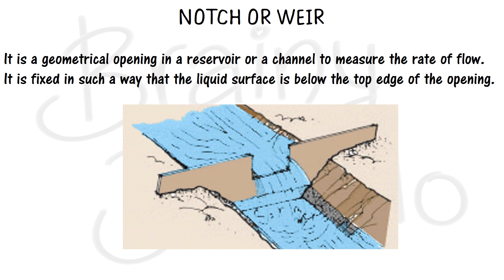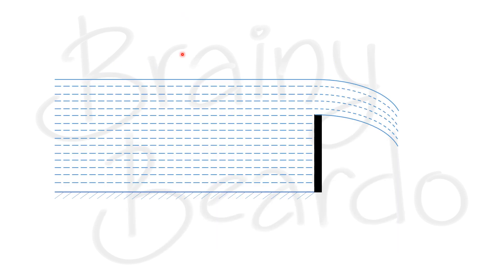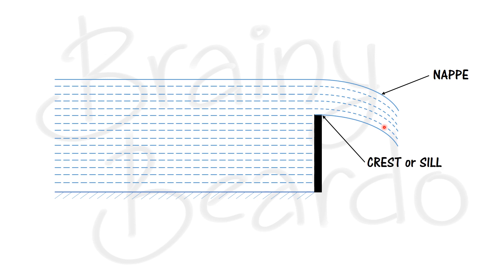If we cut through this particular flow at a cross-section and view from the side, we get an image like this. The black colored object is the notch. When the fluid flows over the notch, the top surface of the liquid which looks like a film is called the nappe, and the edge over which the fluid flows is called the crest or sill.